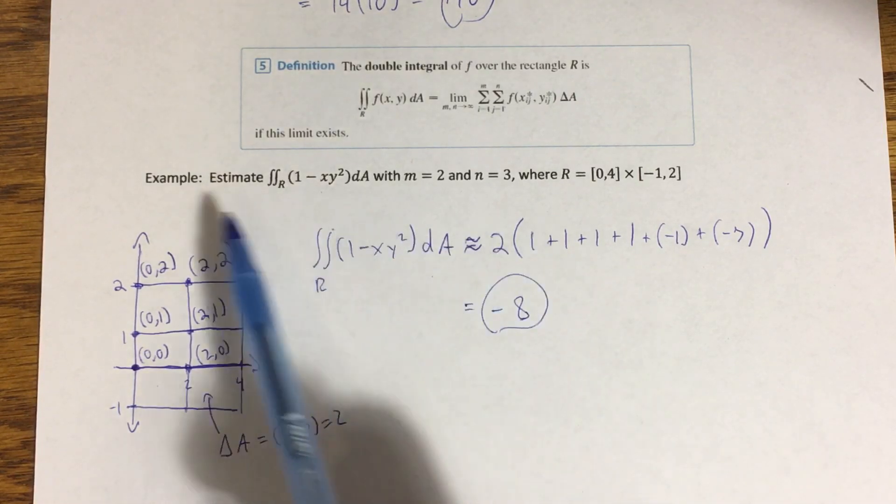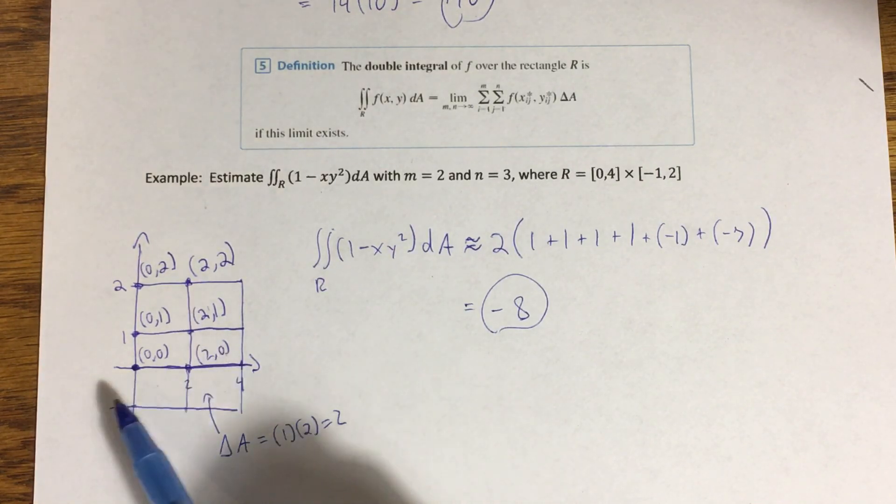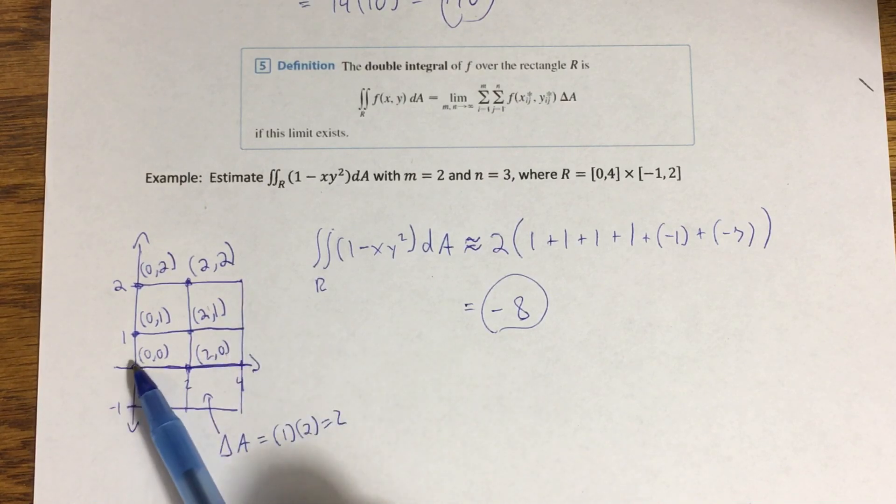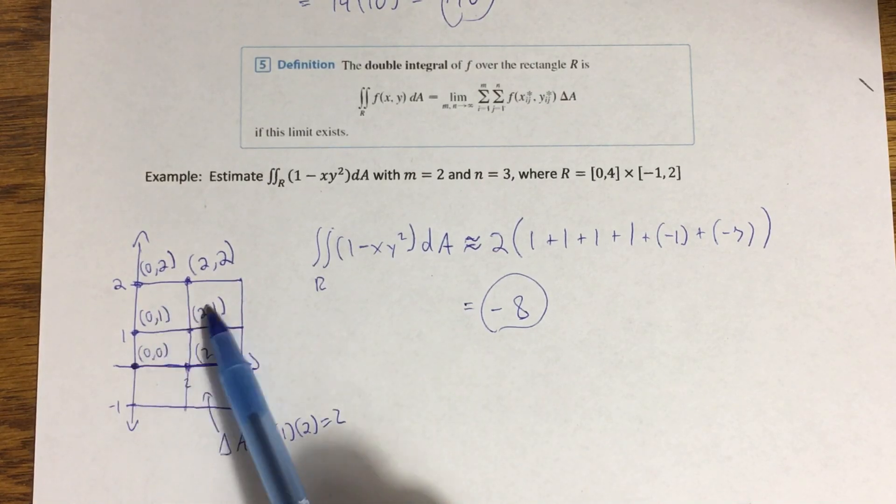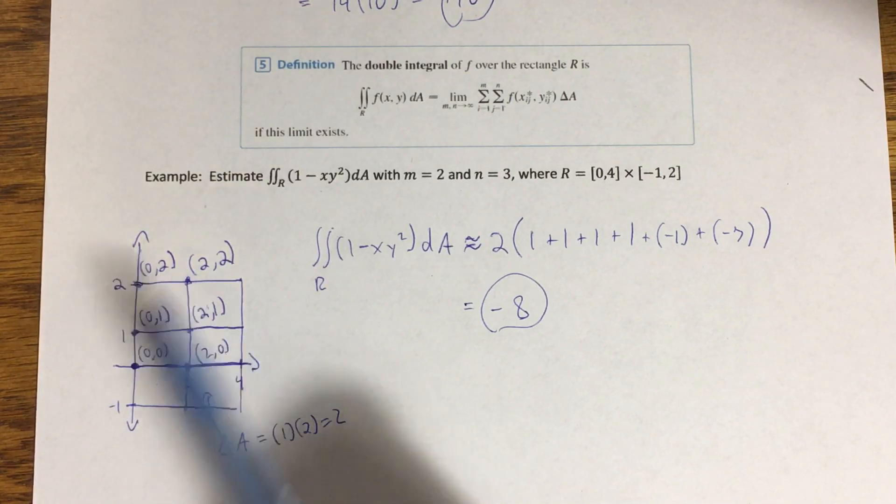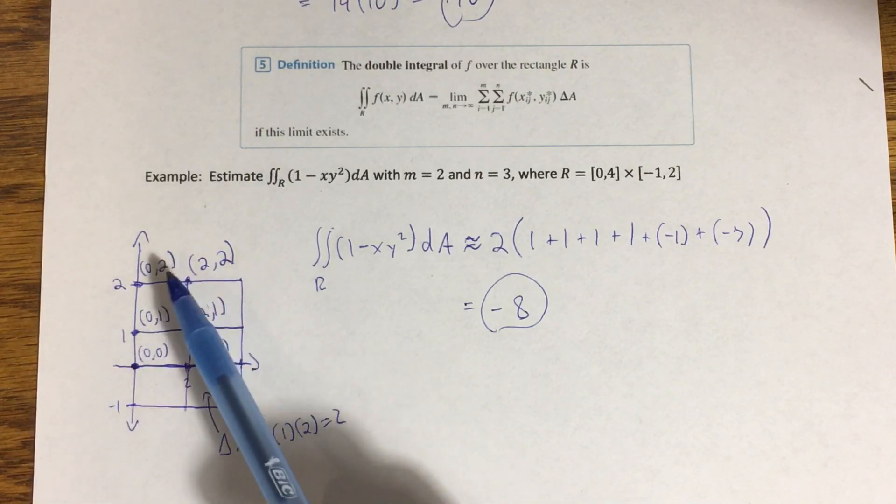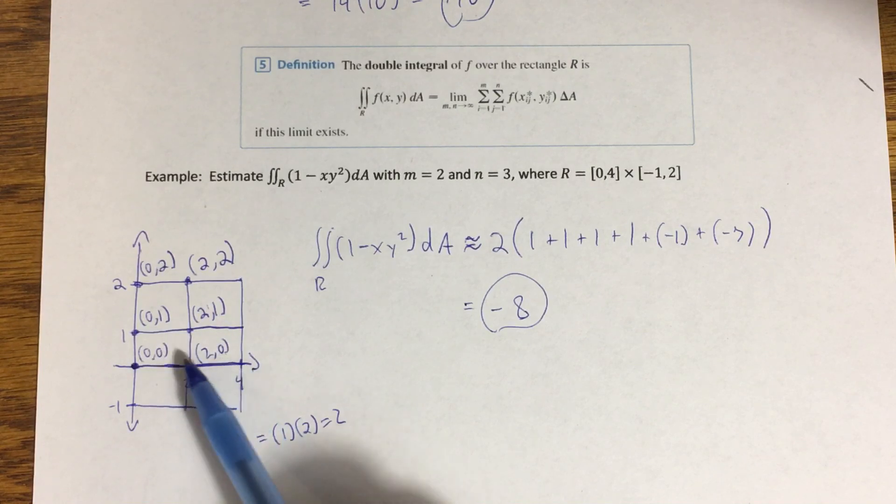So what that means: m tells me how many sub-intervals to break my x-interval into, two, and then how many intervals to break my y-interval into is given by n, one, two, three. That creates a total of six little sub-rectangles here. Now, the way this is stated, it's not telling me any particular way I'm supposed to go about estimating my volume.